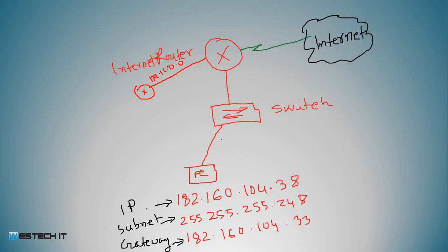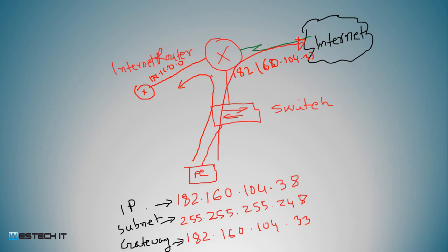We will take the default gateway. This is the static route. If you have a destination, you can see the internet.